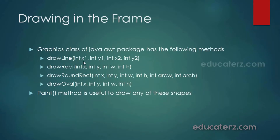drawLine draws a line from starting point (x1, y1) to ending point (x2, y2). For a rectangle, the coordinates start from (x, y) with height h and width w. drawRoundRect additionally uses arcW and arcH, where arcW represents the horizontal diameter of the arc at the corner — it draws the outline of a rectangle with rounded corners. drawOval draws an oval. To draw any of these shapes, we need the paint method of the Component class, which always refreshes the frame contents automatically and is invoked automatically when a frame is created and displayed.